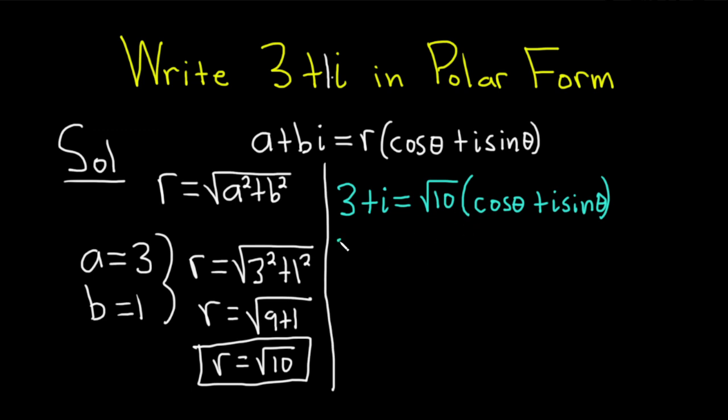Distribute the square root of 10. So you get 3 plus i equals square root of 10 cosine theta, and this is going to be plus i square root of 10 sine theta.